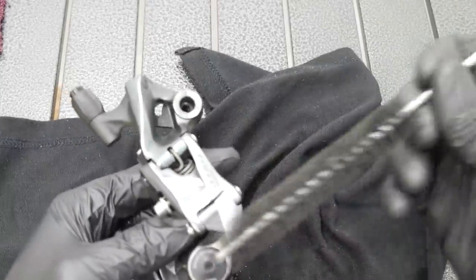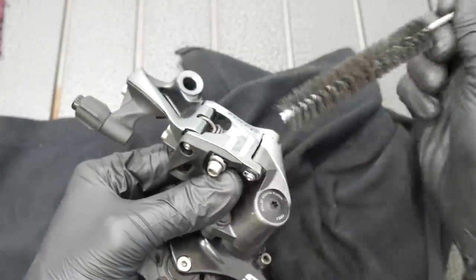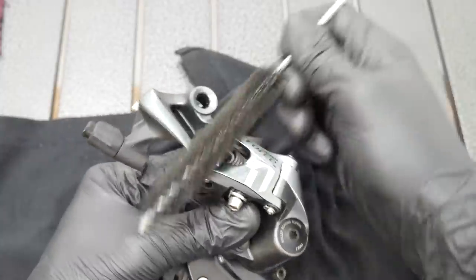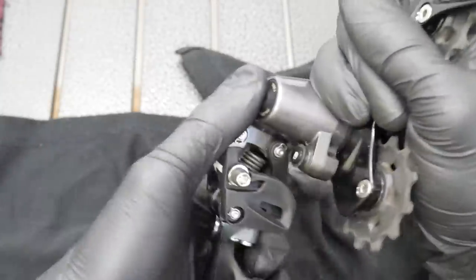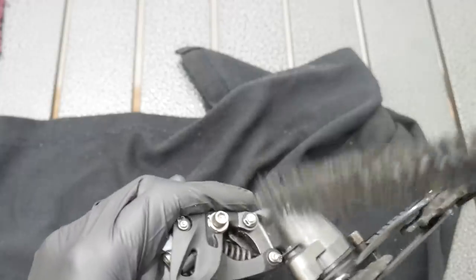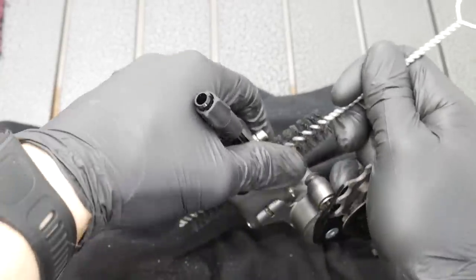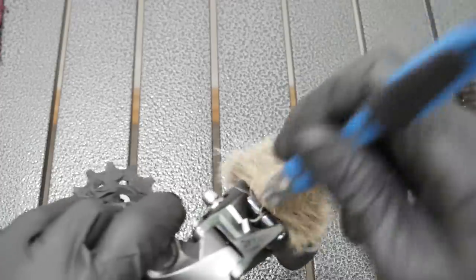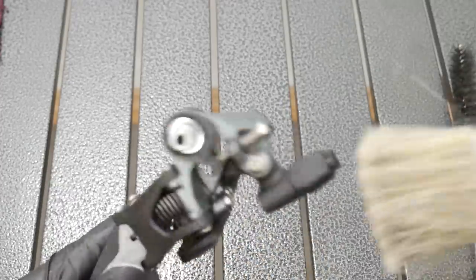Before you remove or disassemble any parts it's good to just clean the rear derailleur from outside so that no dirt will come inside the bearings or the clutch or any other parts, because sometimes it turns out that the bearing might be very clean and you will just open it up and close it again.